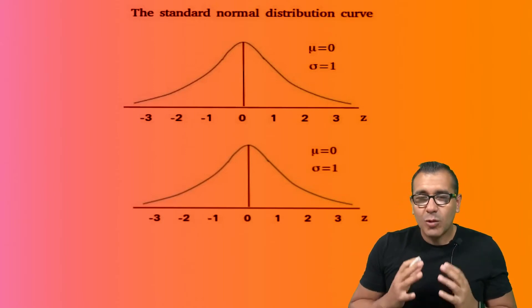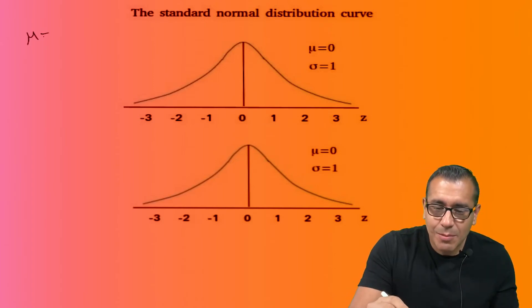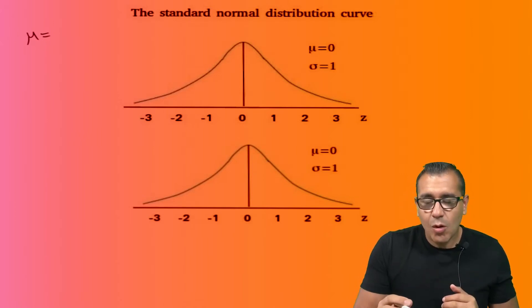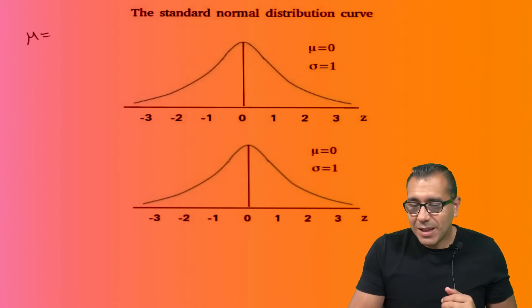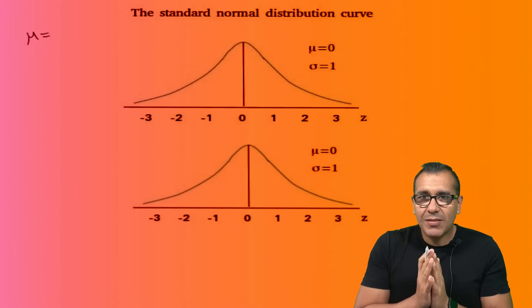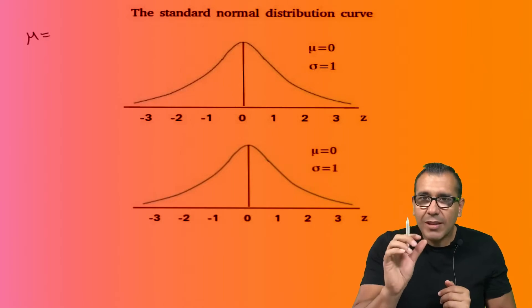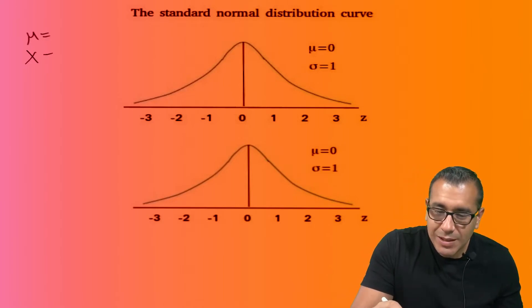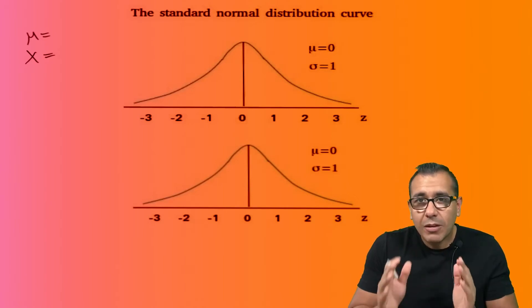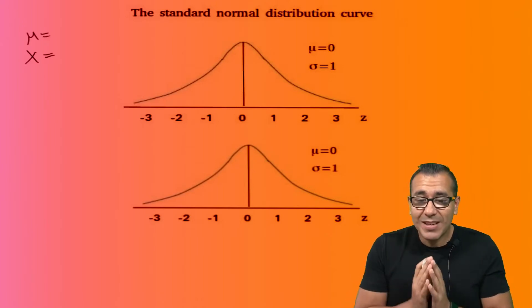You're going to be using these standard normal distribution curves over and over again. Even if you're not using it directly, your technology is going to be using it. Here's the idea: you're going to have some information — a population mean. When we standardize things, we make that mean smack in the middle, and then you're going to have a standard deviation and an observed value X. We want to see how far away from the mean that value X is — how many standard deviations away.